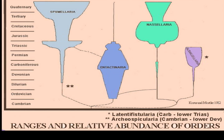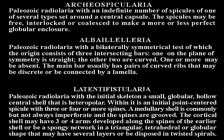Here are the currently recognized major groups with their ranges in time and relative abundances. The asterisks indicate the existence of two other extinct Paleozoic orders. Their names and outstanding characteristics are posted here, and the 13 families that comprise them are listed on this graph.